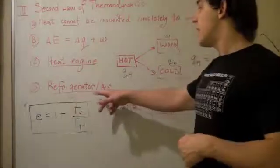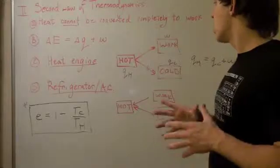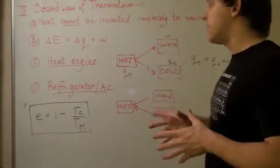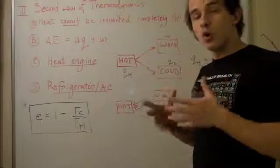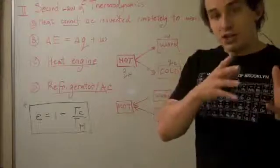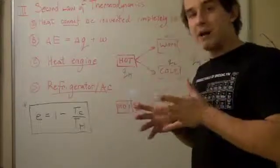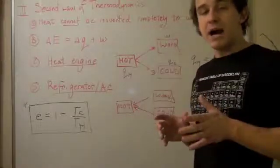Finally, let's talk about refrigerators and air conditioners. Refrigerators and air conditioners are basically reverse heat engines. What actually happens is work is inputted so that heat can be transferred from a cold body to a hot body, or energy can be transferred from a cold body to a hot body.